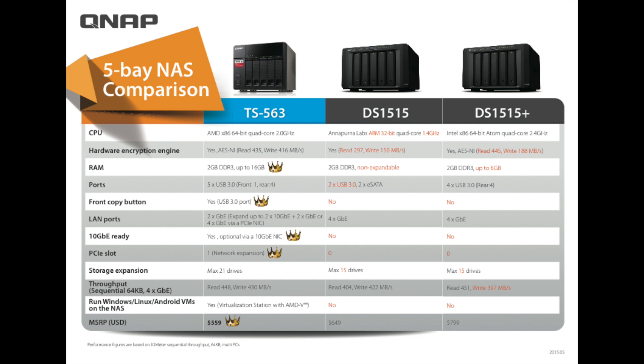The storage expansion of each of the units — the ability to attach to other units to expand — is as follows: the QNAP can expand to a maximum of 21 hard drives. The Synology DS-1515 has a max capacity of 15 hard drives, and the DS-1515+ also has a max capacity of 15 hard drives. Looking at throughput, the TS-563 reads at 448 and writes at 430 megabytes per second. The DS-1515 reads at 404 and writes at 422. The DS-1515+ reads at 451 and writes at 397 megabytes per second.